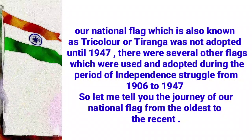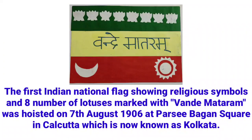So let me tell you the journey of our national flag from the oldest to the recent. The first Indian national flag, showing religious symbols and eight lotuses marked with Vande Mataram, was hoisted on 7th August 1906 at Parsibagan Square in Calcutta, which is now known as Kolkata.